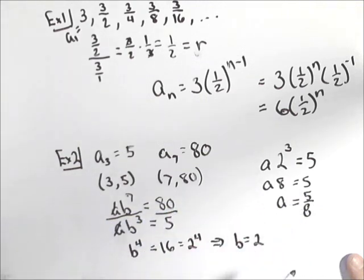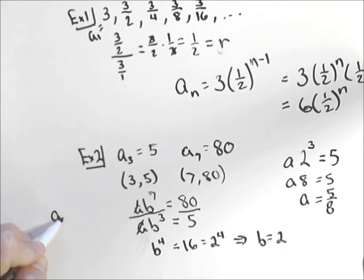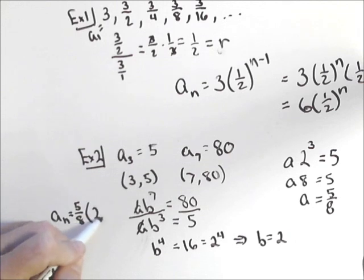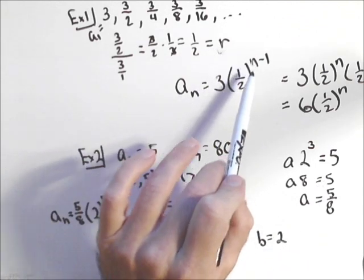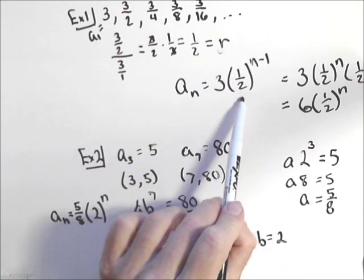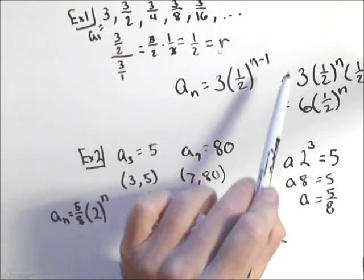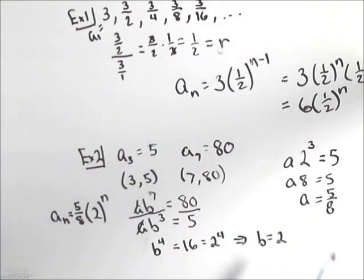So our general term in this case is going to be a sub n equals five-eighths times two to the n. Now, we didn't use an n minus one here because of the way we solved it. When you'll use the n minus one is when what you know is the common ratio and the first term. That's a very slick, easy way to put together the formula.